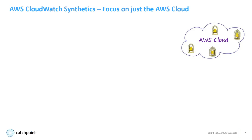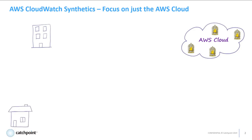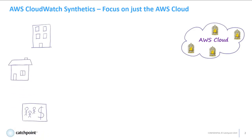Well, that's all well and good, but what happens when AWS CloudWatch Synthetics is reporting everything looks good from their perspective, but the end-users — the people consuming these services that work from office buildings, from home, and customers coming in from various locations — are complaining of poor performance?